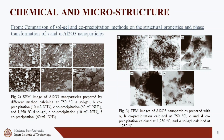XRD analysis showed the formation of gamma alumina and alpha alumina phases at different temperatures, with the sol-gel process requiring higher temperatures for gamma crystallization compared to the precipitation method. BET analysis was used to calculate the specific surface area and particle size of the materials, while TEM imaging revealed different shapes and sizes of alumina particles synthesized by co-precipitation and sol-gel methods. FTIR spectroscopy was also used to study the presence of organic materials and phase conversion. Overall, the article provides a detailed analysis of the chemical and microstructural properties of the fabricated alumina nanostructures.